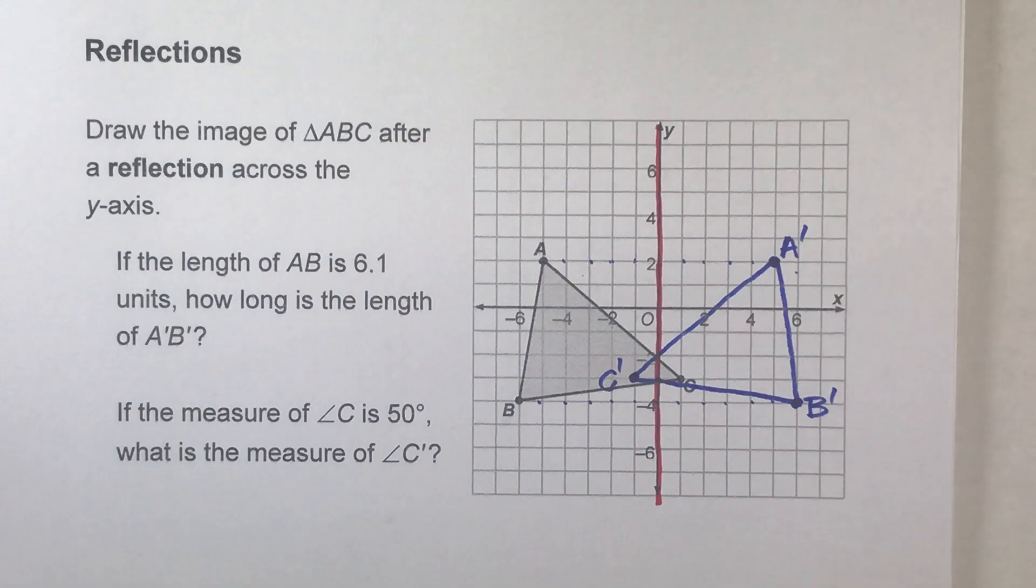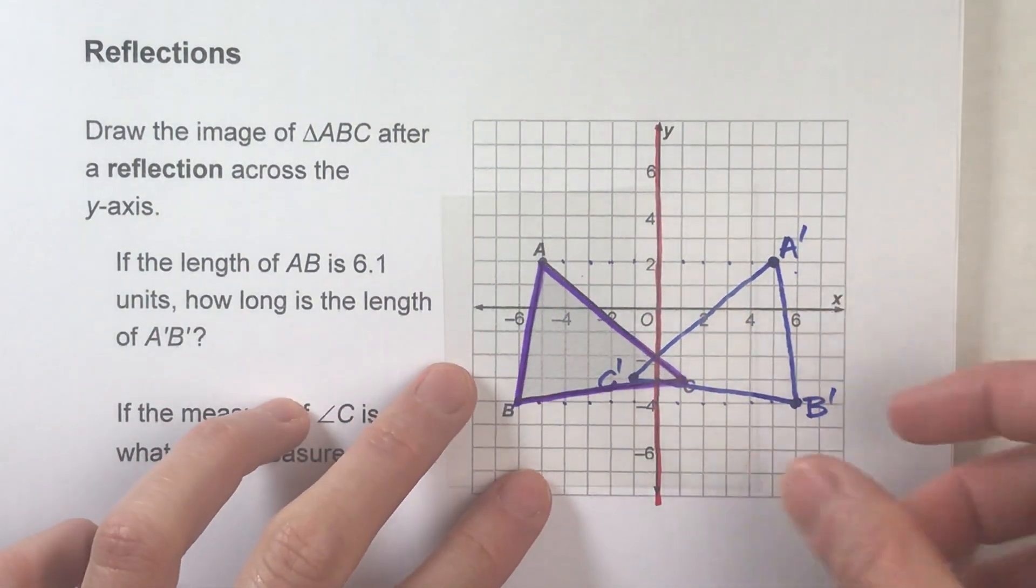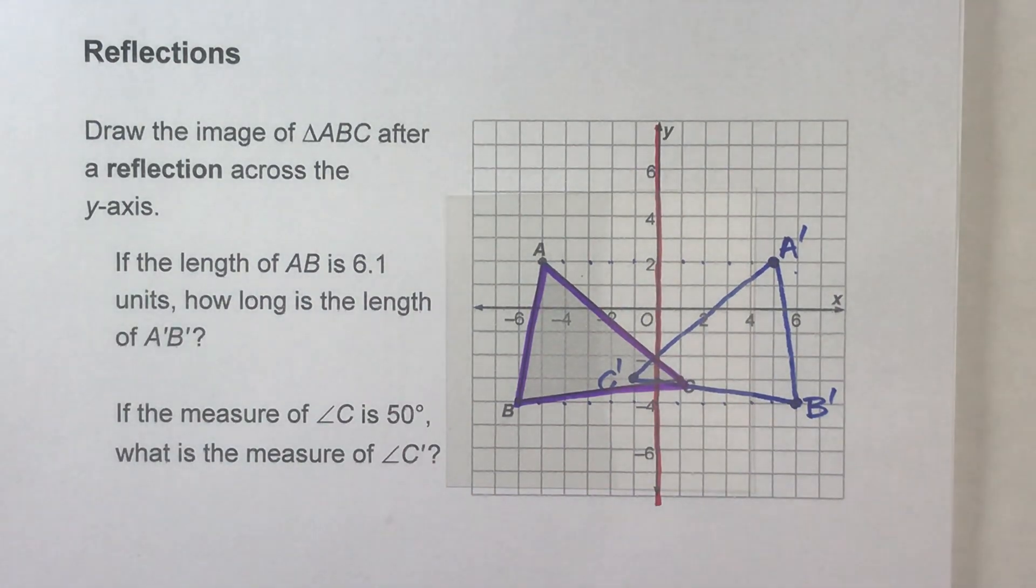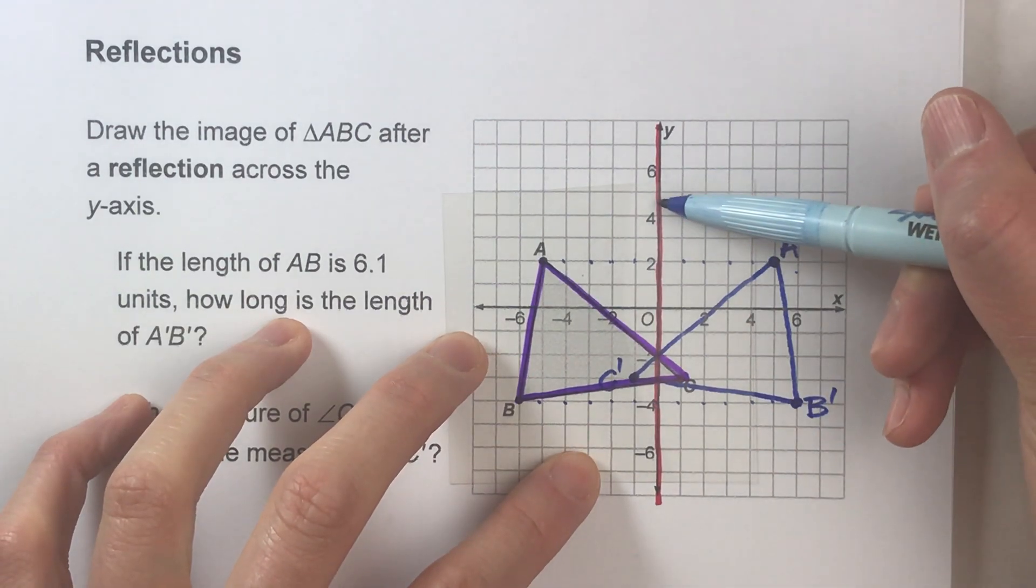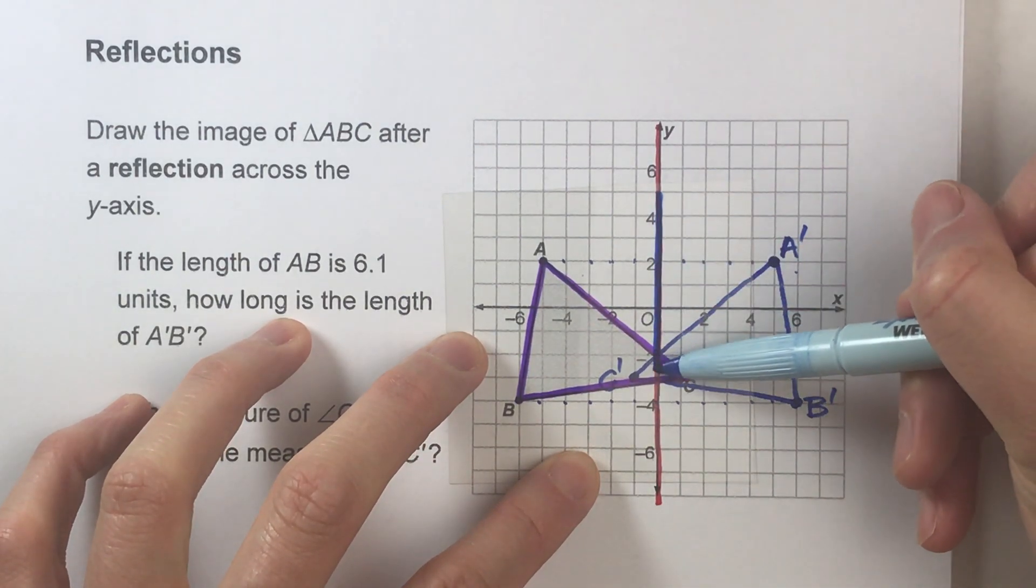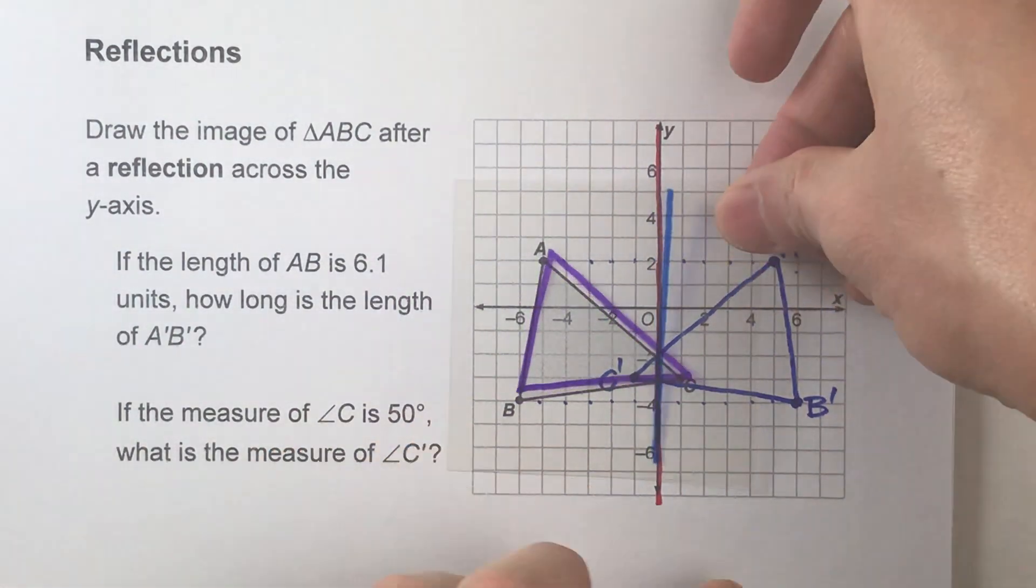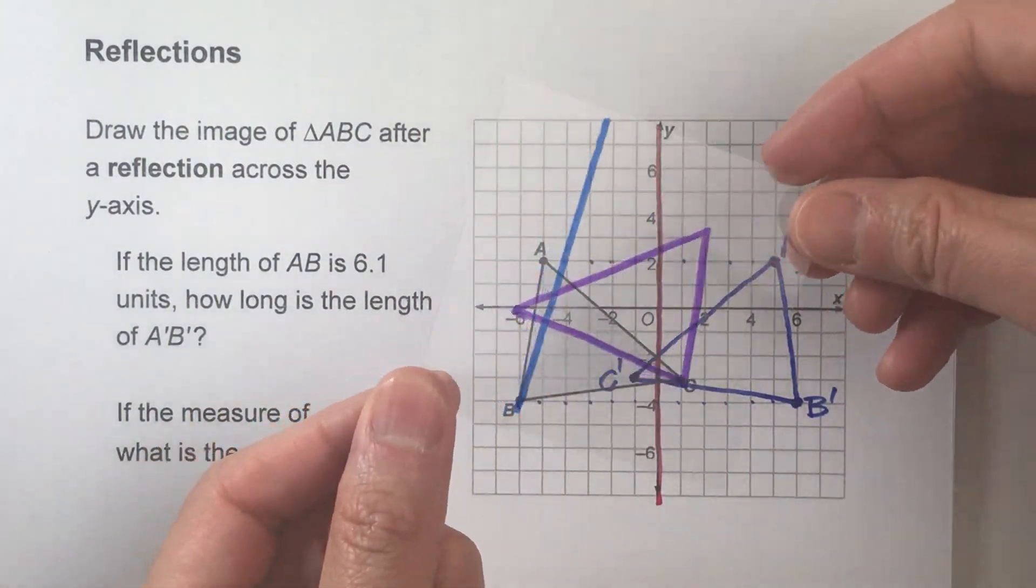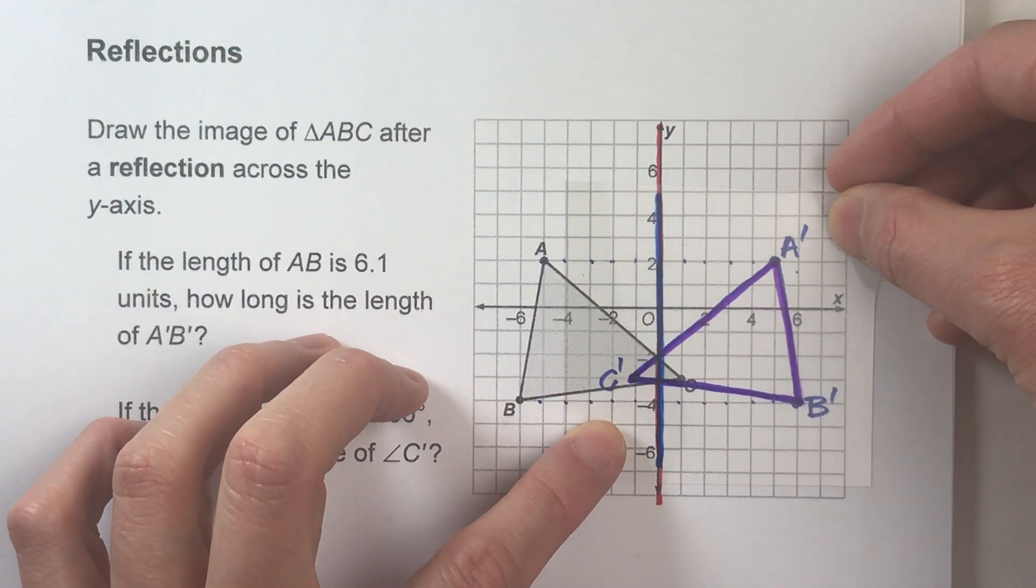And you can kind of see this with a transparency if you want to visualize this. So what you do is, you just have the original triangle right there, and if you draw in your line of reflection on here, then when you reflect it, just make sure the line of reflection matches up. And boom, there it is.